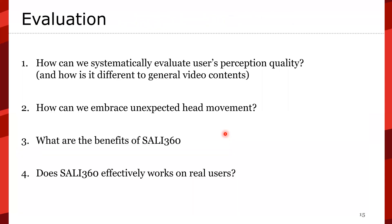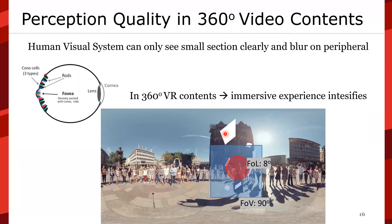For evaluation, we address three questions: How can we systematically evaluate users' perceived quality, and how is it different from general video content? How can we embrace unexpected head movement? And what are the benefits of SALI360 — does it effectively work on real users? Regarding perceptual quality in 360 video, the human visual system can only see a small section clearly. In 360 video, immersive experiences are intensified. The 90-degree FOV is what the system can render, while the foveal region — approximately 8 degrees — is what humans actually focus on.